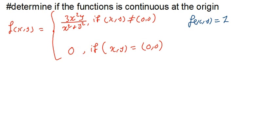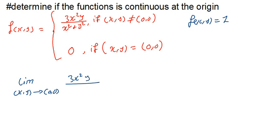So I will say: the limit as (x, y) approaches (0, 0) of 3x²y over x² + y². When it comes to determining this limit, you can approach from different directions — the x-axis, the y-axis, using y = x², or y = x — but the method I prefer is using polar equations. It's very straightforward and saves a lot of time.